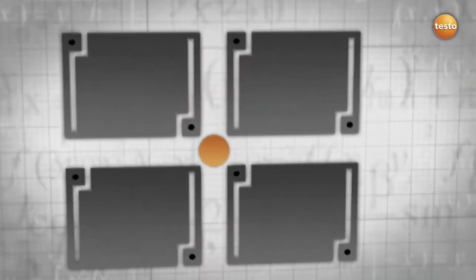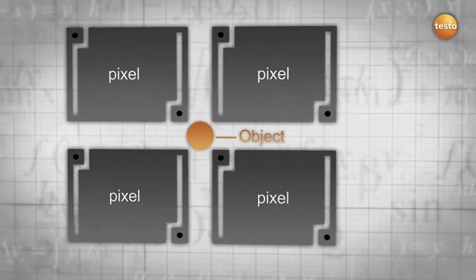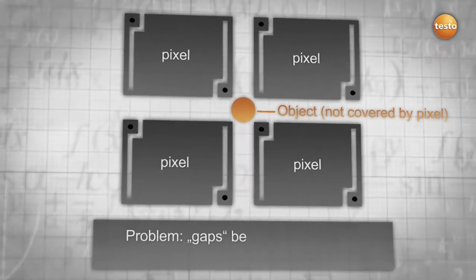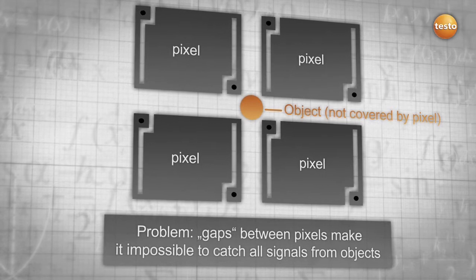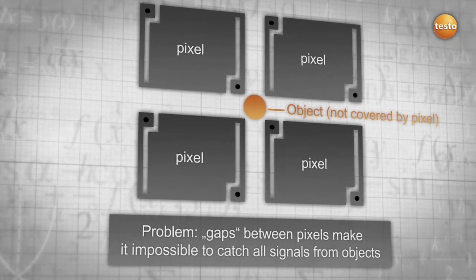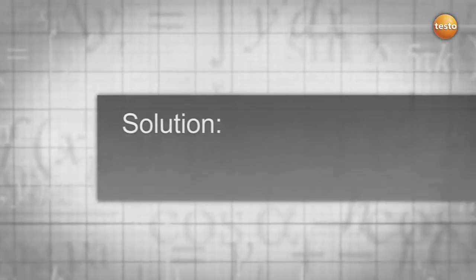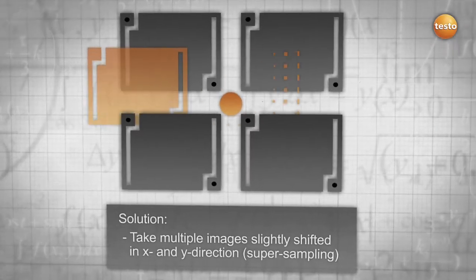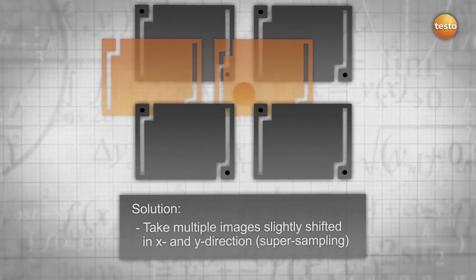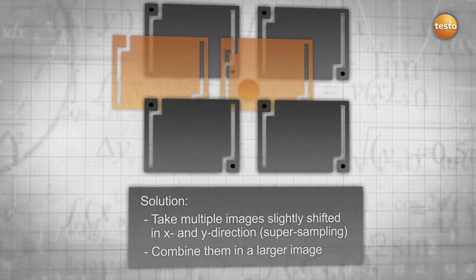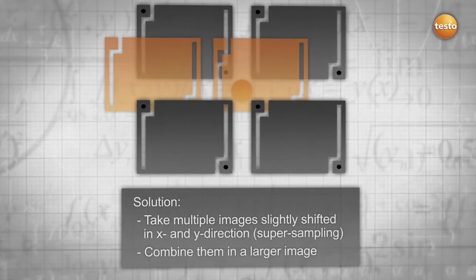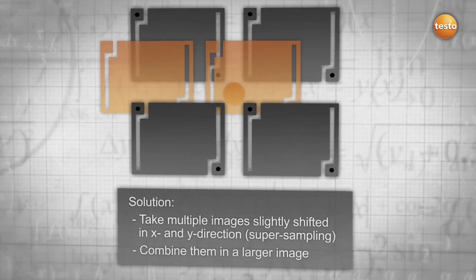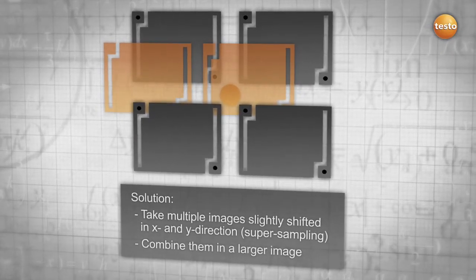One of the main problems with detectors are the gaps between each pixel. Through these gaps, it is almost impossible to catch all signals emitted by objects laying in between pixels. Super sampling provides a solution to this problem since the advanced technology takes multiple images, slightly shifts them, and combines them into one larger image. This technology enables you to record more signals and results in more accurate measurement and more pixels.